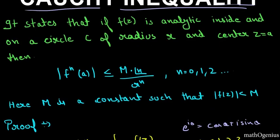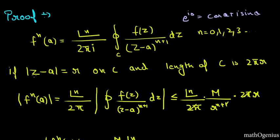We will convert it into the circular form. We will put z minus a equal to r and mod of z minus a will be equal to mod of r e raised to iota theta. Mod of r is r and e raised to iota theta is cos theta plus iota sin theta and its modulus is 1.